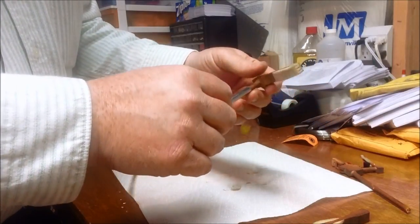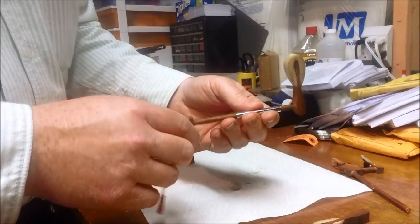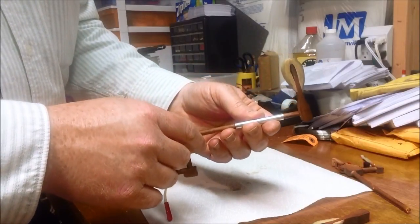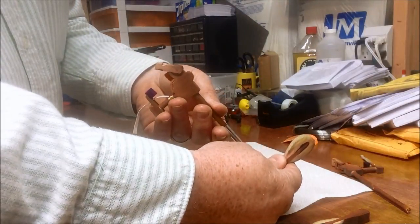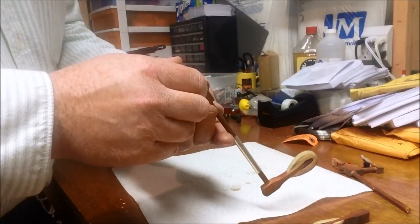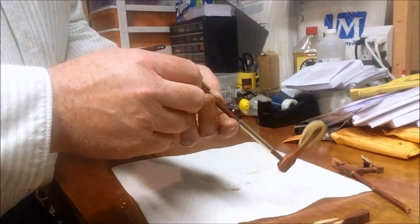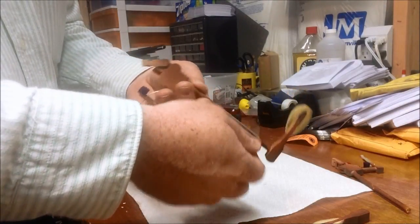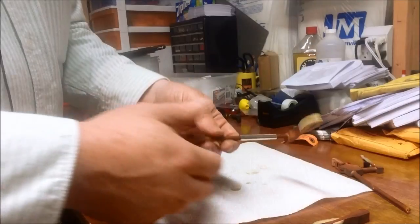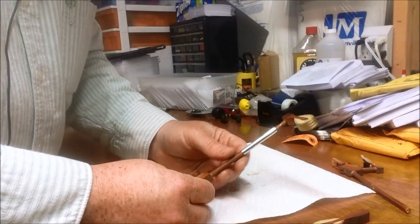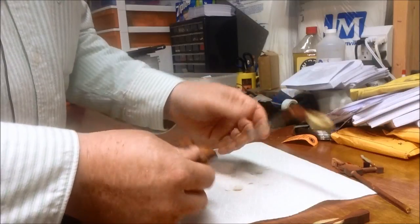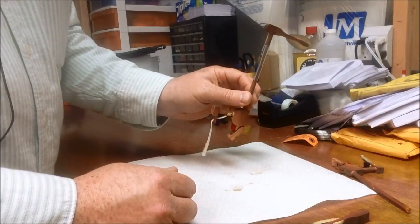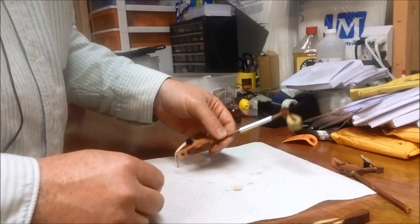And that clamps it together so that as the glue dries. Just double check the alignment because once the glue dries then it's a little bit harder to make adjustments. Get that lined up and then you let the glue dry and you've got a well-repaired hammer shank there.